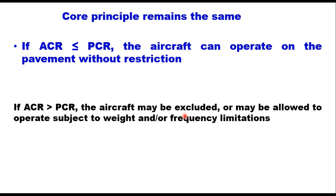The core principle remains the same: if ACR is less than or equal to PCR, the aircraft can operate on the pavement without restriction — in the old method it was ACN less than or equal to PCN. But if ACR is greater than PCR, the aircraft may be excluded or may be allowed to operate subject to weight and/or frequency limitations. These two criteria are the same in both ACN/PCN and ACR/PCR methods.